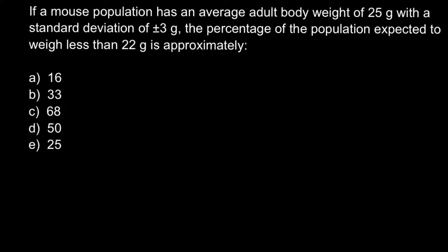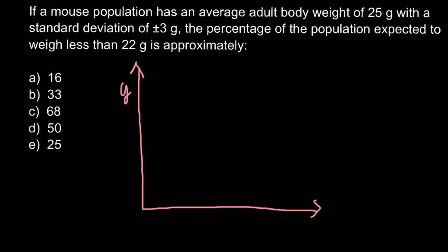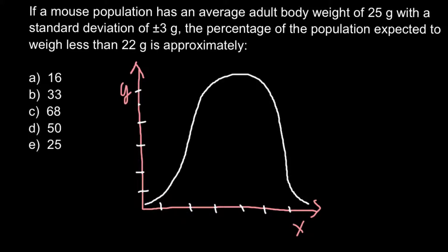In order to show you how to solve this problem, let me draw a graphic first. We have our y and x axes — here we have the distribution of absolute numbers, and here we have the distribution of frequencies. Normally, traits are distributed like this, so we would have a bell shape.